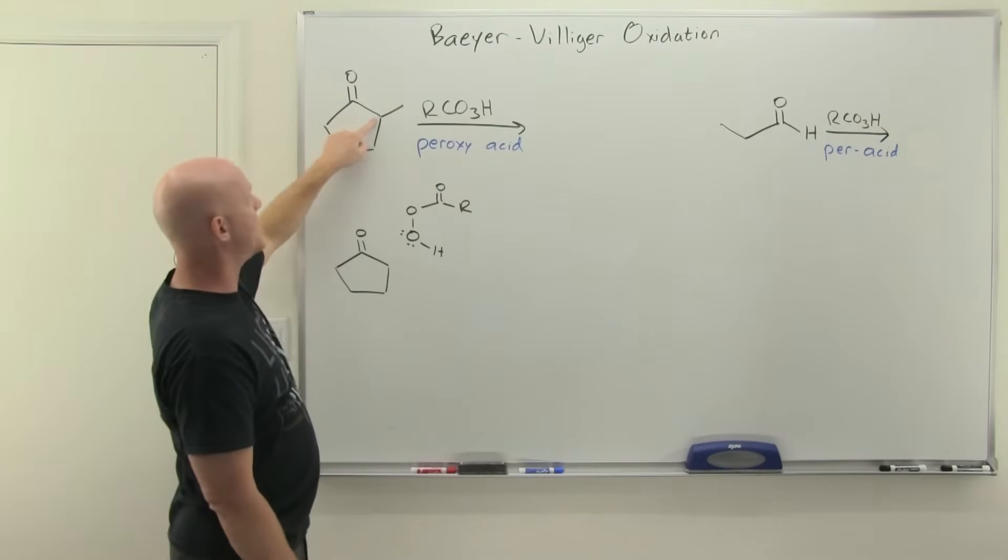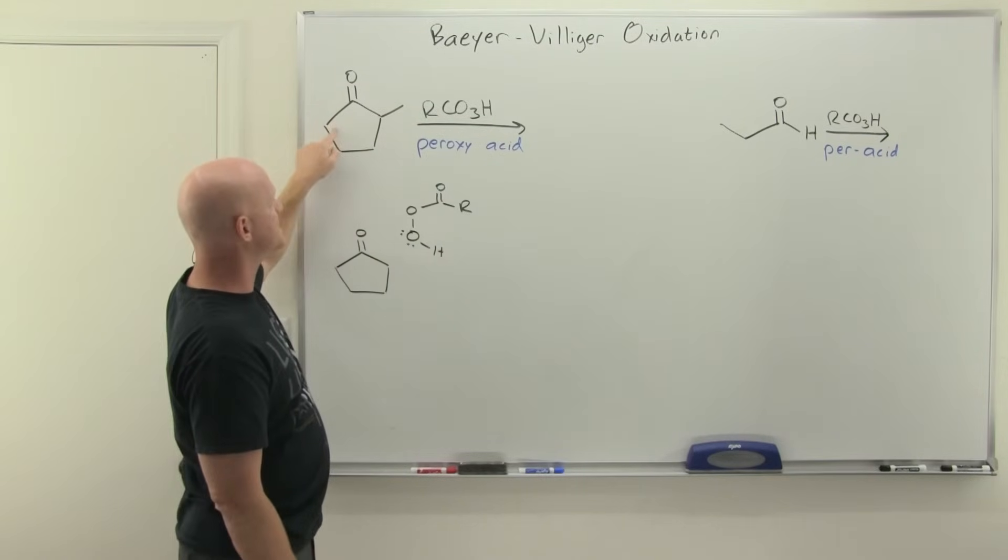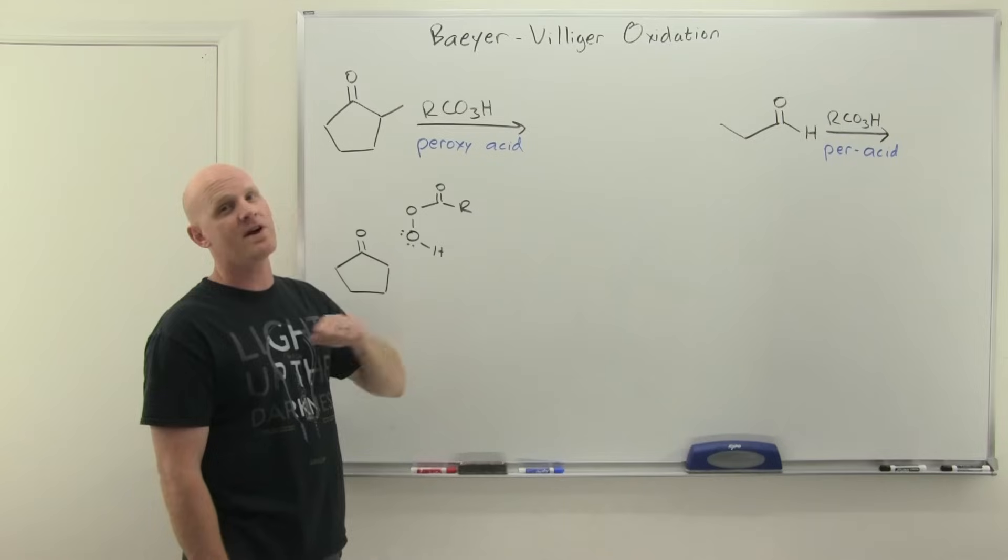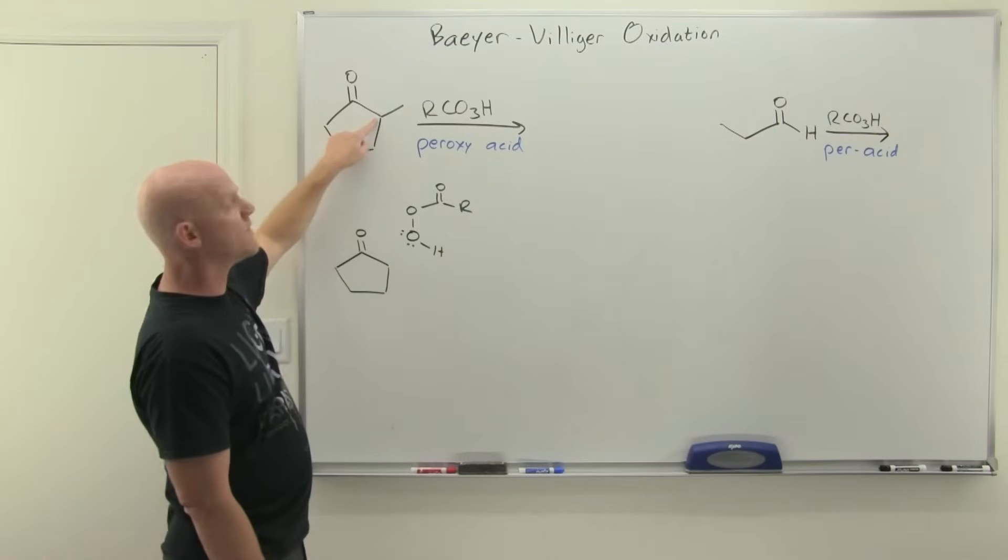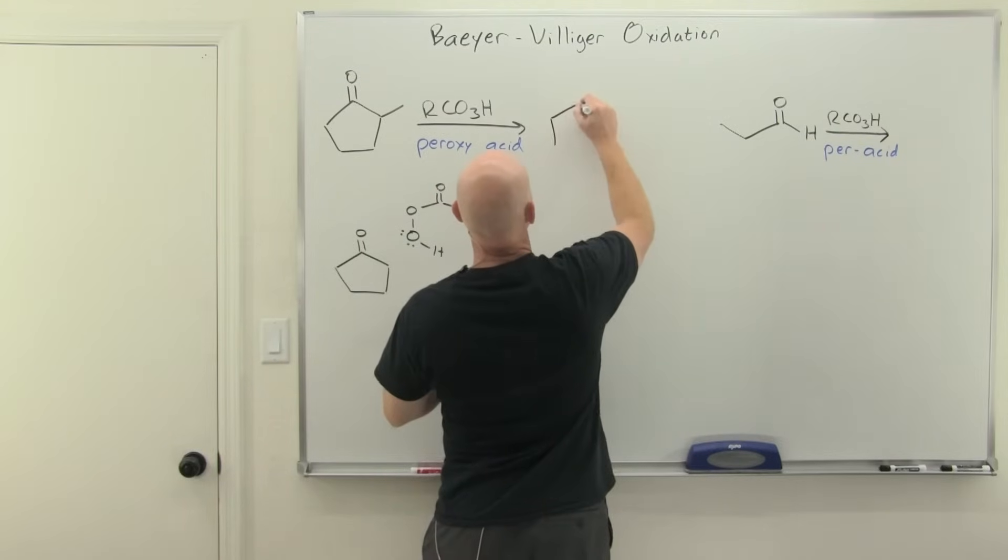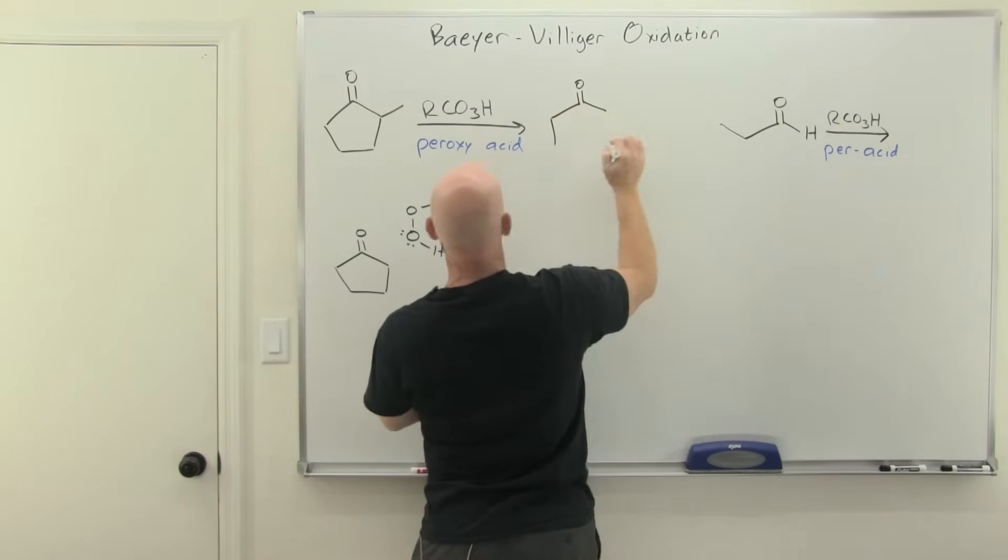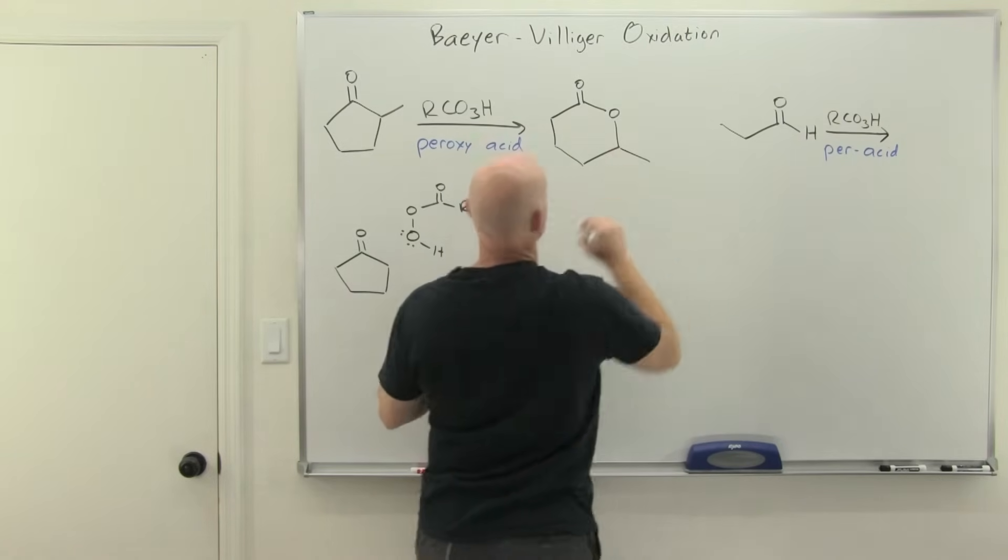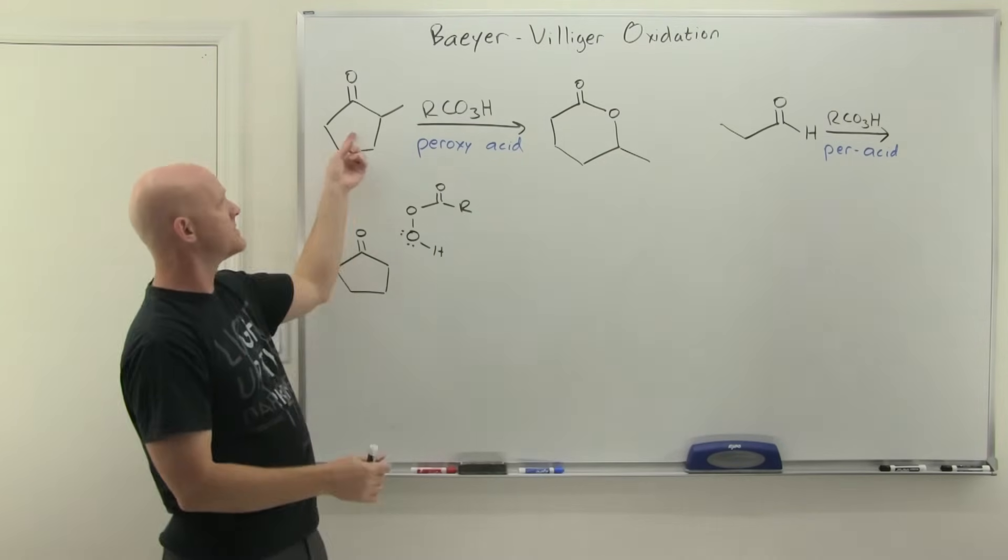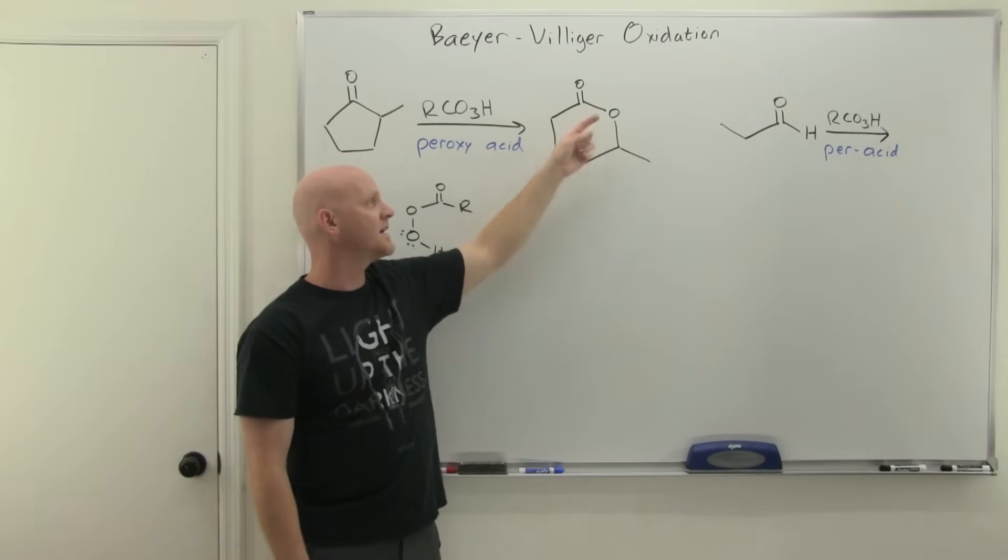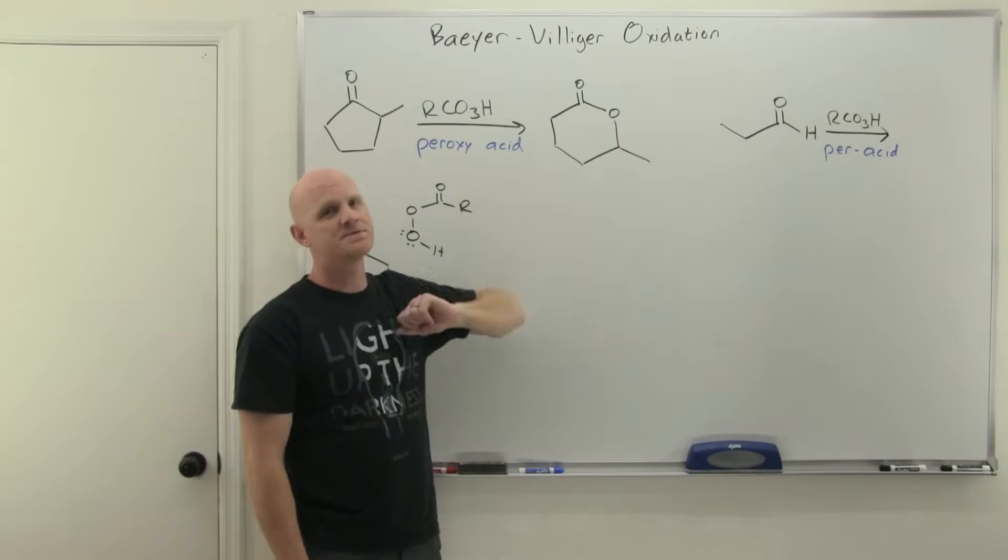The big thing to know is that the alpha carbon (adjacent to the carbonyl) that is more substituted is where the oxygen will insert. Here, the one on the right is more substituted, so the oxygen inserts on that side. In this case, my five-membered ring turns into a six-membered ring with an extra oxygen on the side that had the more substituted alpha carbon. That's our product.